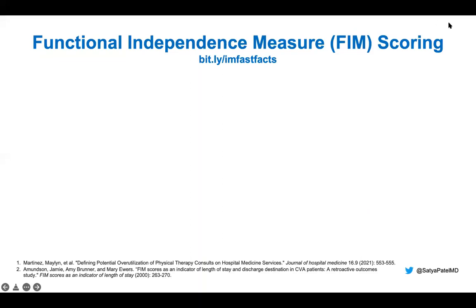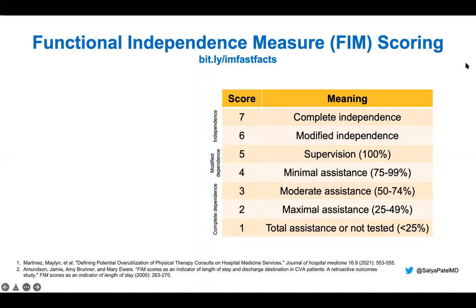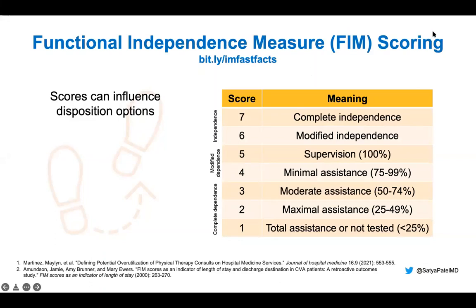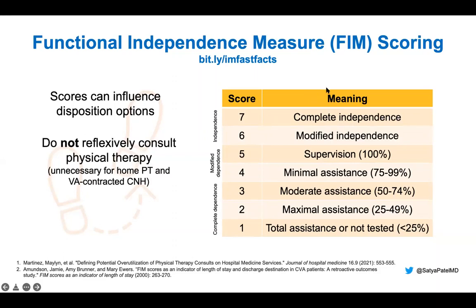In summary, the FIM is the Functional Independence Measure. The scores go from 1 to 7 — 7 is complete independence and 1 is total assistance. There is value in the in-between scoring because depending on where the patient needs to go, sometimes they have supervision when transferring versus not. Remember that the scores can really influence your dispo options. Do not reflexively consult physical therapy — it's unnecessary for home PT and VA contracted nursing homes.